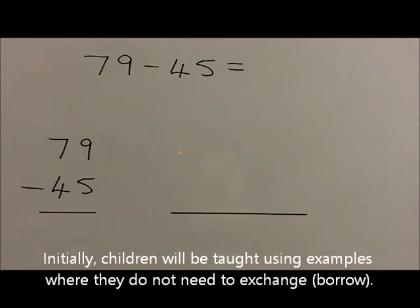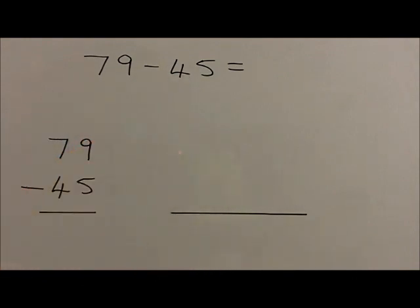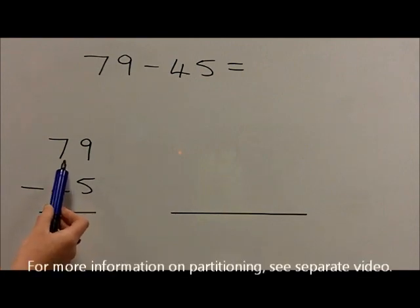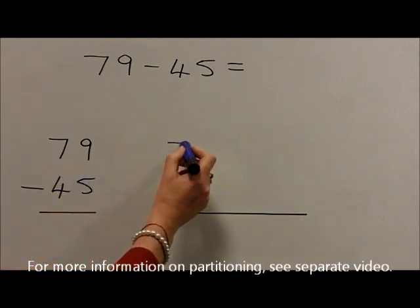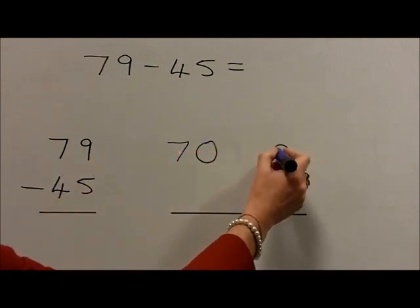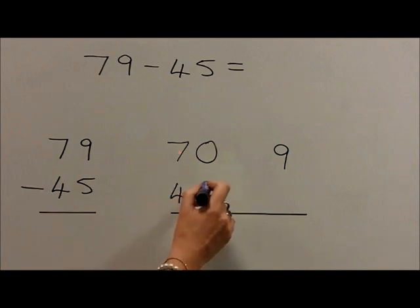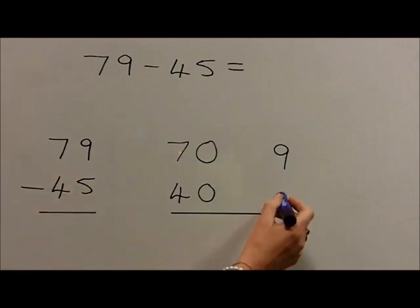For example, when solving the calculation 79 take 45, they would first write the calculation out. The 79 is then partitioned into the 10s so that 7 tens are equal to 70 and 9 units are equal to 9. The 45 is partitioned into 4 tens which are 40, written below the 70, and the 5 units are written as 5 below the 9 units.